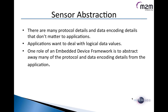The first part is sensor abstraction. As we said, there are many different sensors providing many different protocols. One of the keys to developing M2M applications is the capability of abstracting from the single protocol and concentrating on the logical data values. One of the main roles of an embedded device framework is to abstract the protocol so that the M2M application focuses on developing the business logic instead of coding individual protocols.